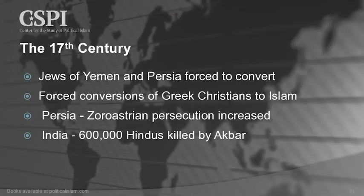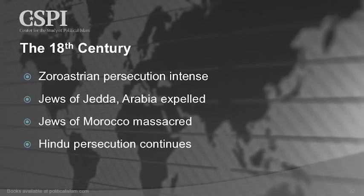In the 17th century, more Jews are forced to convert in Yemen and Persia, there is forced conversion of Greek Christians, Zoroastrian persecution increases, and one of the religions to be annihilated is Zoroastrianism in Persia. In India, 600,000 Hindus are murdered. In the 18th century, Zoroastrian persecution becomes intense, the Jews of Jeddah are expelled, the Jews of Morocco are massacred, and the Hindu persecution continues.